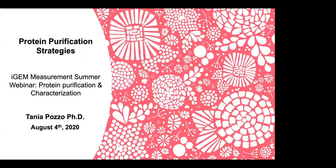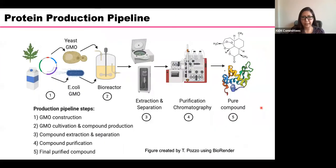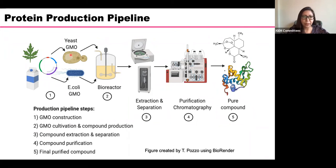This section is called protein purification strategies. Here I'm presenting the protein production pipeline. In this part, you first engineer your microbe — you can engineer yeast to produce a metabolite from a plant, or you can engineer E. coli to produce some protein, maybe a protein from milk.